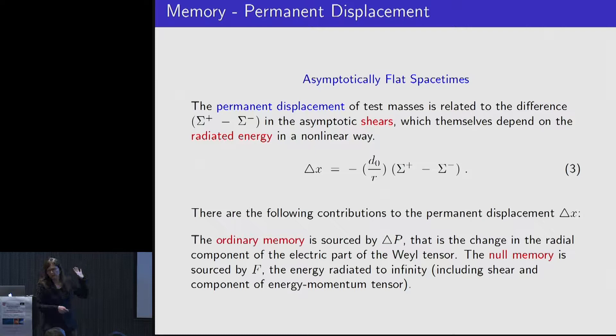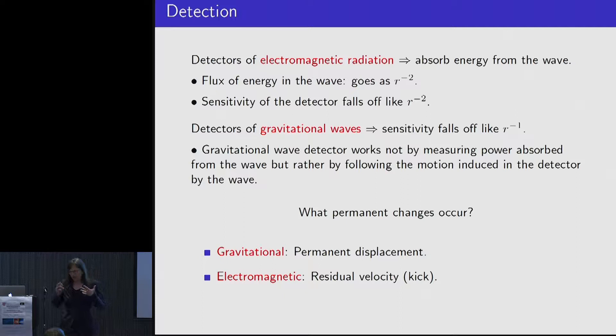To make things a little bit more simple, this is all in the asymptotically flat case. There's two more pieces I would like to add. To give you a very simple case and look at this a little bit more closely and focus into the ordinary and null part of the memory, I'll give you an example from pure electromagnetism, just Maxwell equations, and I'll add more about the cosmological spacetime, how the memory looks like in a cosmological spacetime.